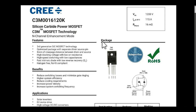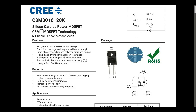Let us understand about C3M0016120K. Looking at the basic three parameters: VDS drain-to-source voltage is 1200 V, ID at 25°C is 115 A, and RDS(on) is 16 mΩ. The RDS(on) for this device is very low because it is made with SiC technology. This is a C3M MOSFET — an N-channel enhancement type MOSFET and a third generation SiC MOSFET.